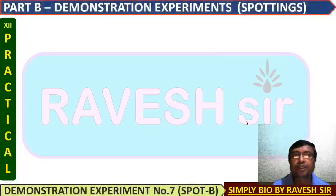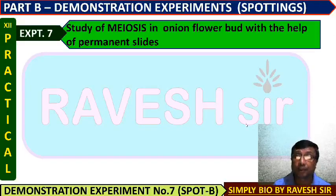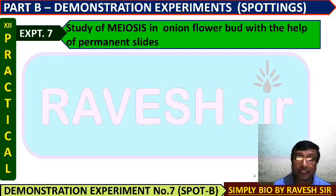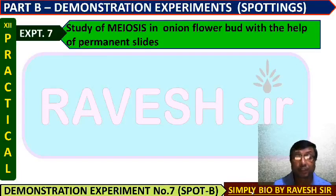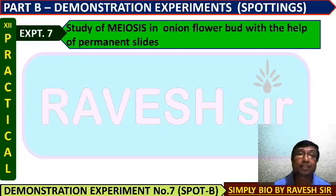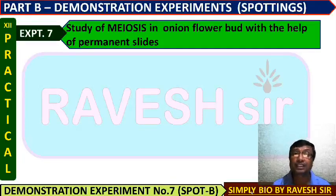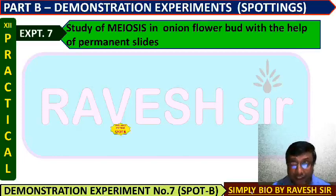So you have got experiment 7. The statement is: study of meiosis in onion flower bud with permanent slides. Those are regular practical slides we were supposed to study meiosis with. But this year, because of the COVID guidelines, which instruct that slides or microscopes are not to be used, so with pictures, photos, and diagrams you can observe meiosis slides or stages.